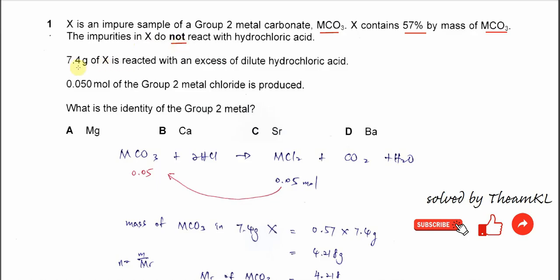7.4 grams of X reacts with excess hydrochloric acid. 0.05 moles of the Group 2 metal chloride is produced. What is the identity of the Group 2 metal?